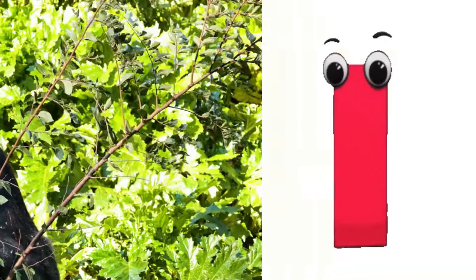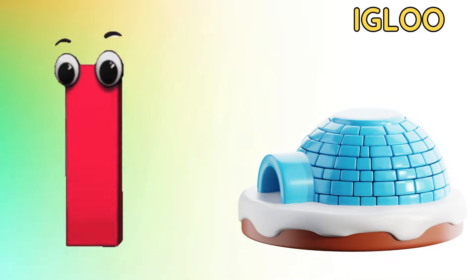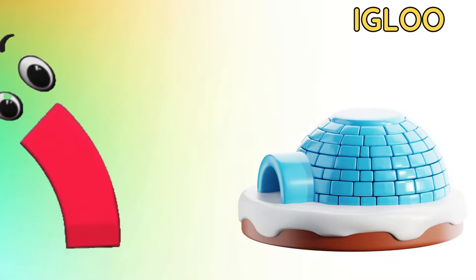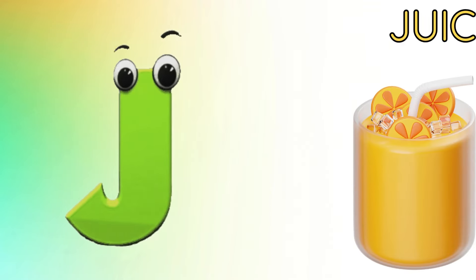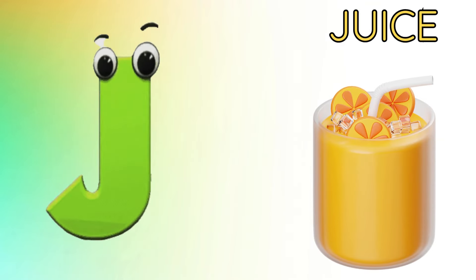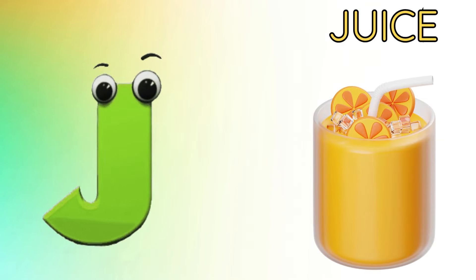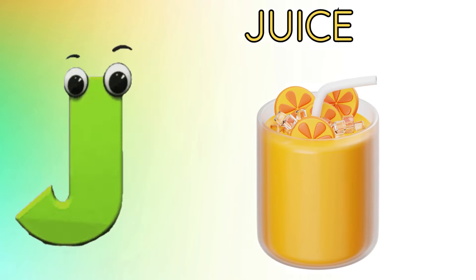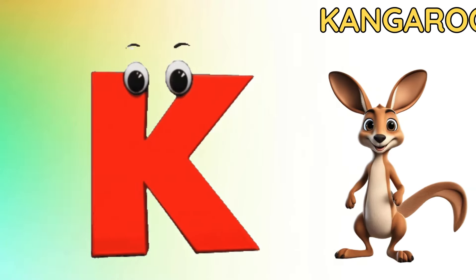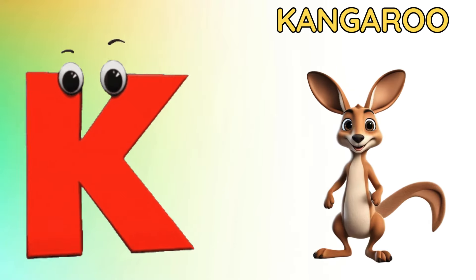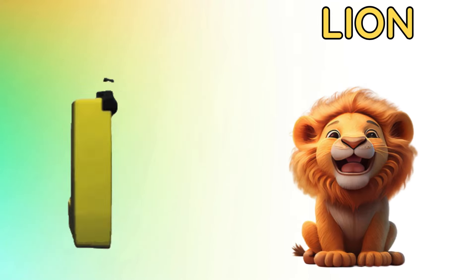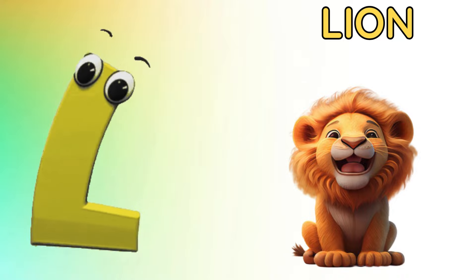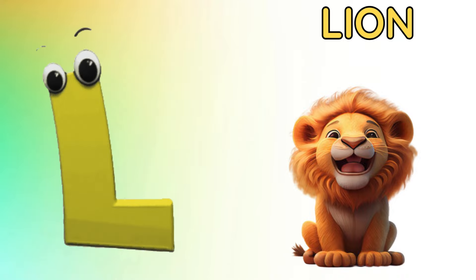I is for igloo, i-i-igloo. J is for juice, ju-ju-juice. K is for kangaroo, k-k-kangaroo. L is for lion, lion.